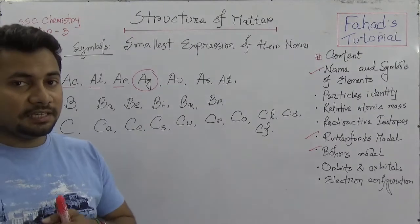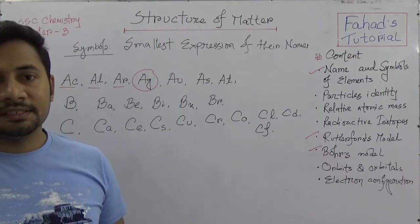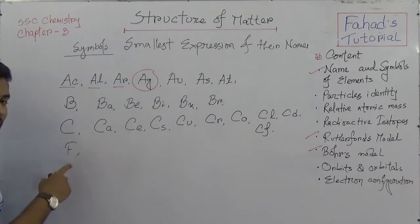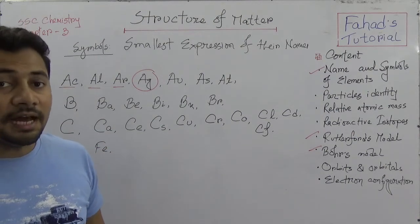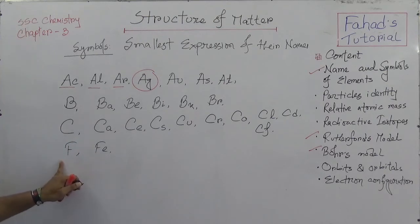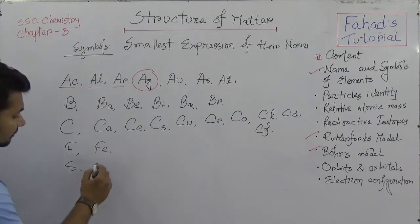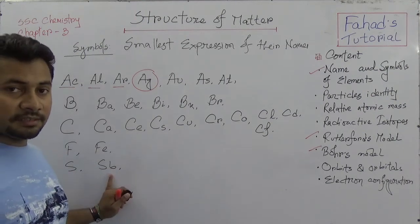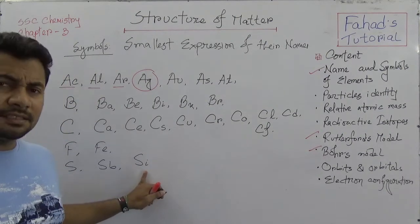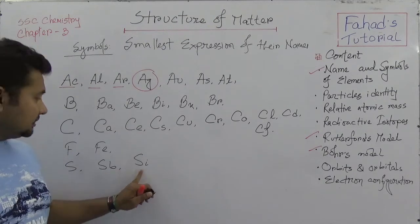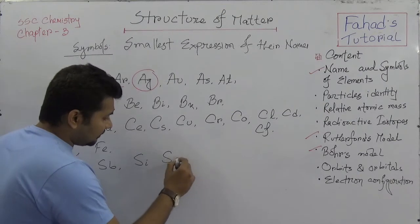I hope that when you see an element's name and symbol, you can identify the element. For example, 'F' is fluorine, 'FE' is iron — from the Latin ferrum. 'S' is sulfur, 'SB' is antimony, 'SI' is silicon, and 'SE' is selenium.